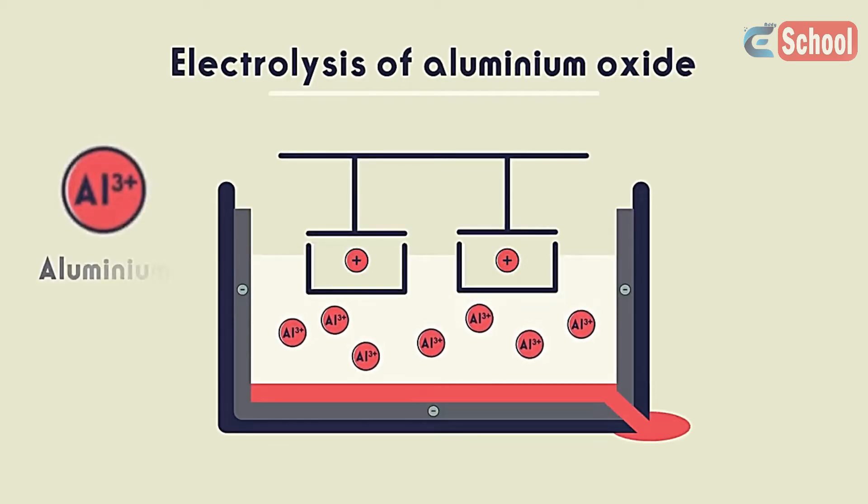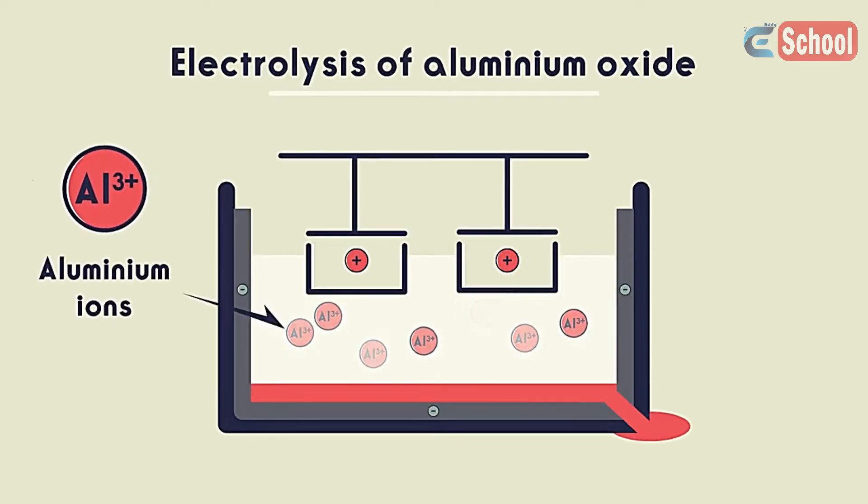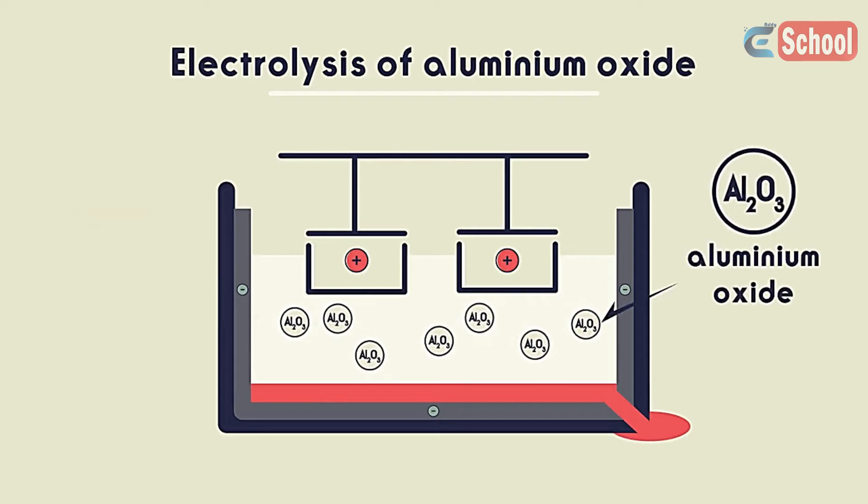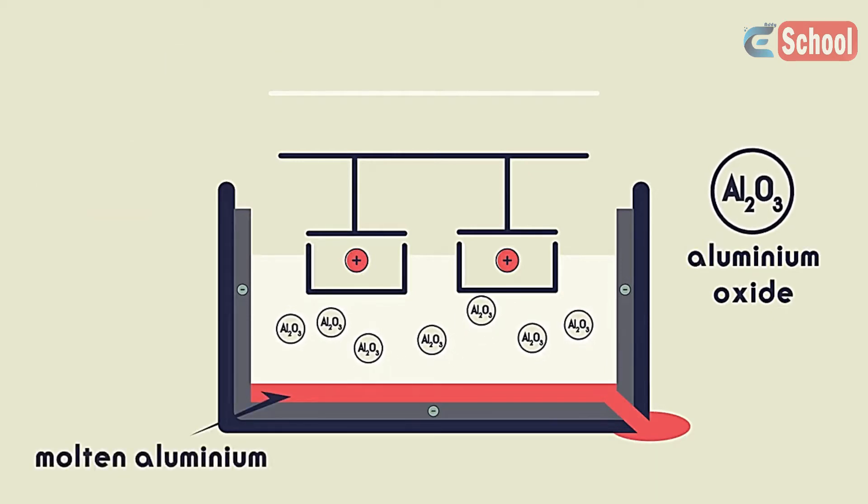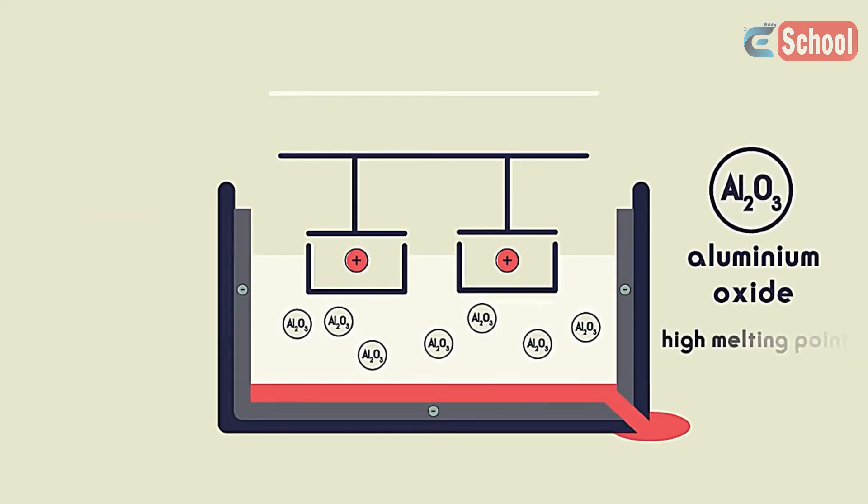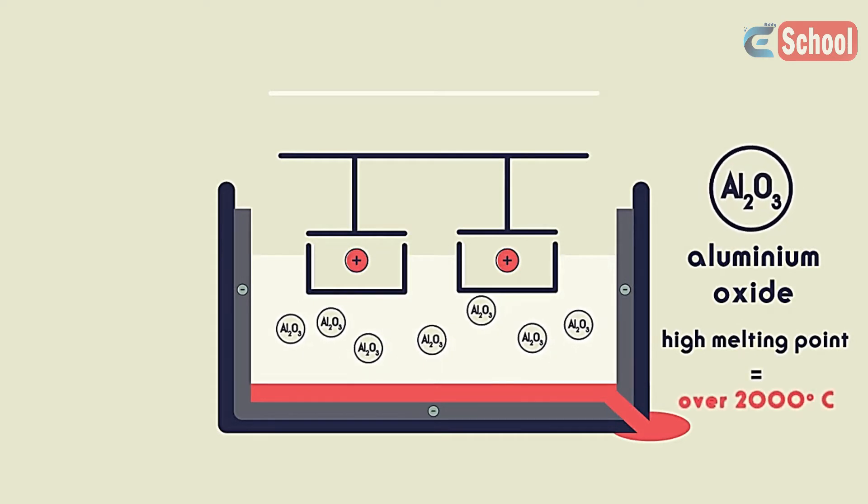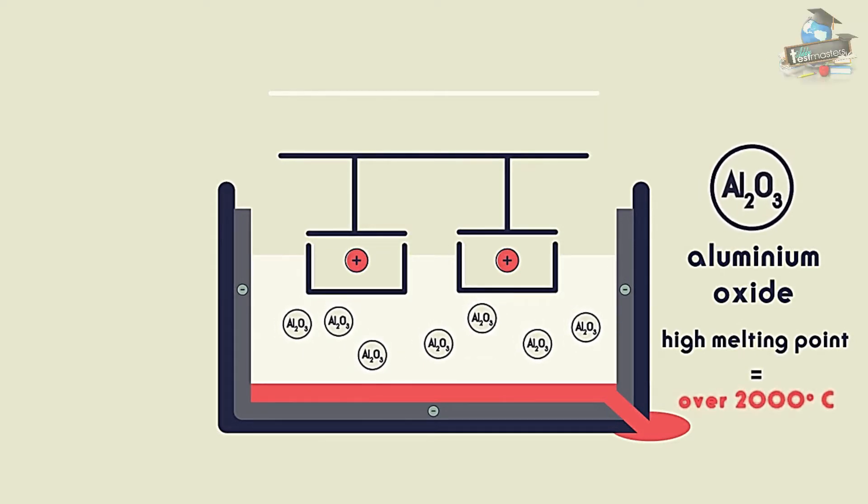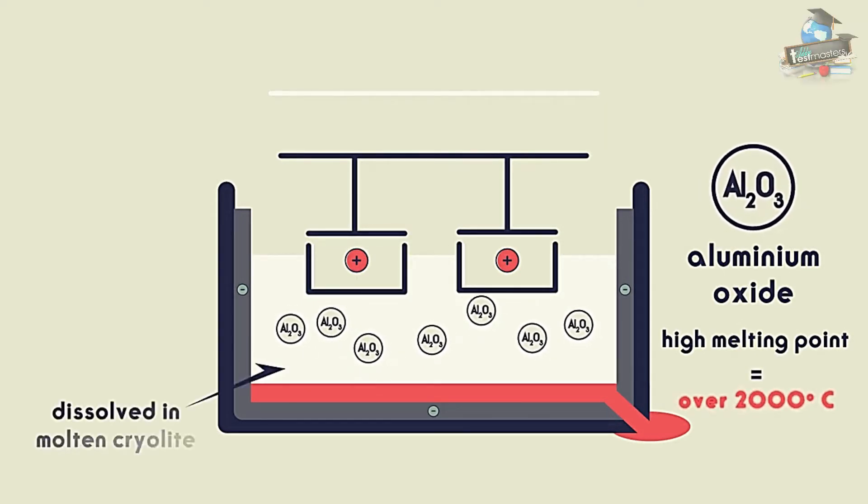In electrolysis, ions need to pass through the electrolyte and so the aluminium oxide must be made molten so that this can happen. Aluminium oxide has a very high melting point, over 2,000 degrees Celsius. So instead of trying to melt it, the aluminium oxide is dissolved in molten cryolite.